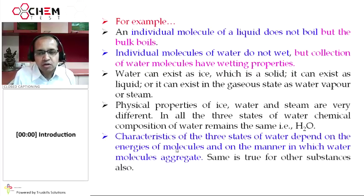Characteristics of the three states of water depend on the energy of molecules and the manner in which water molecules aggregate. For example, in ice, water molecules aggregate in such a manner that it acquires more volume than water in liquid state. That is why density of ice is less than the density of water liquid. Hence, ice floats on water and because of that reason, aquatic life can survive.